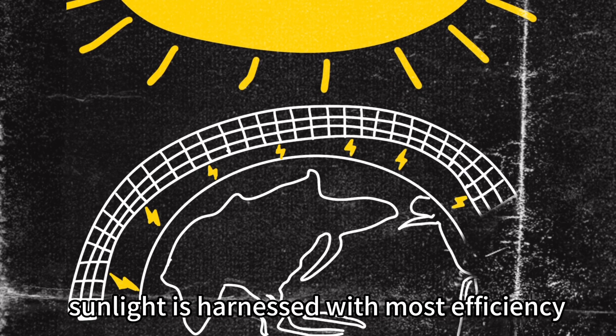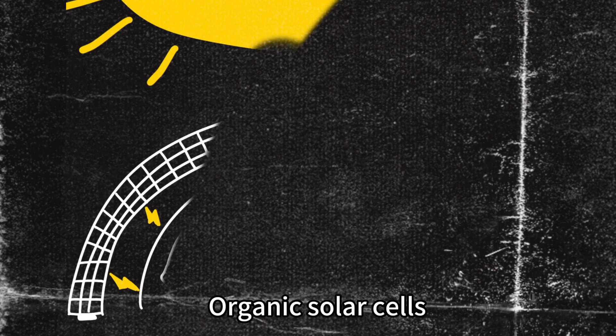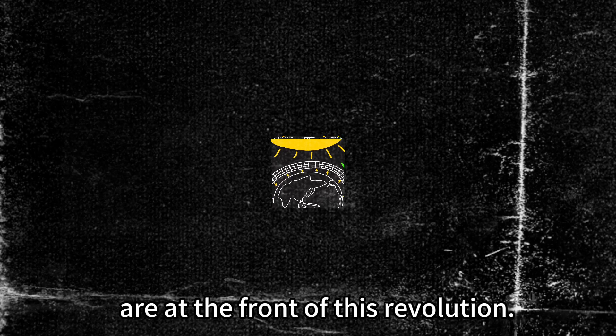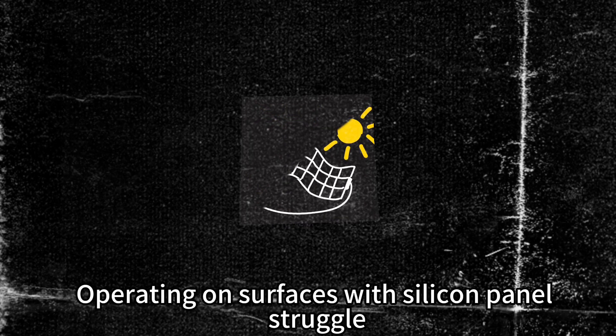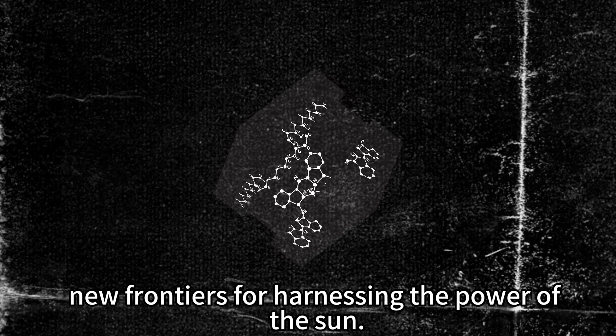Picture a world where sunlight is harnessed with most efficiency and sustainability. Organic solar cells are at the front of this revolution. Operating on surfaces where silicon panels struggle, organic solar cells unlock new frontiers for harnessing the power of the sun.